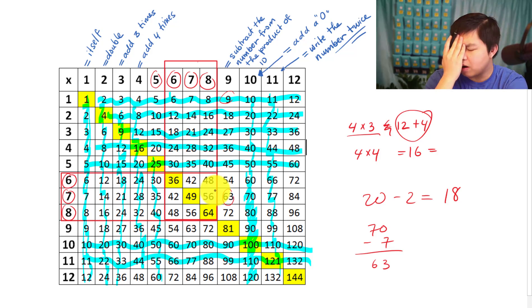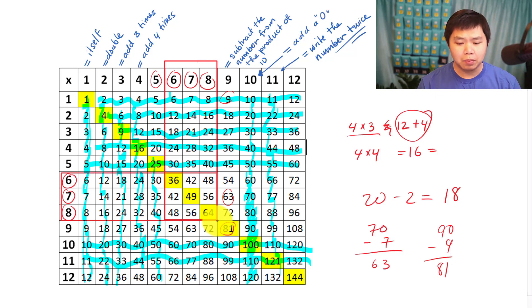Let's try something else. How about nine? So we have ninety. Ninety minus nine. That is eighty-one. Does it work? Yes. So now we have memorized the whole entire timetable.